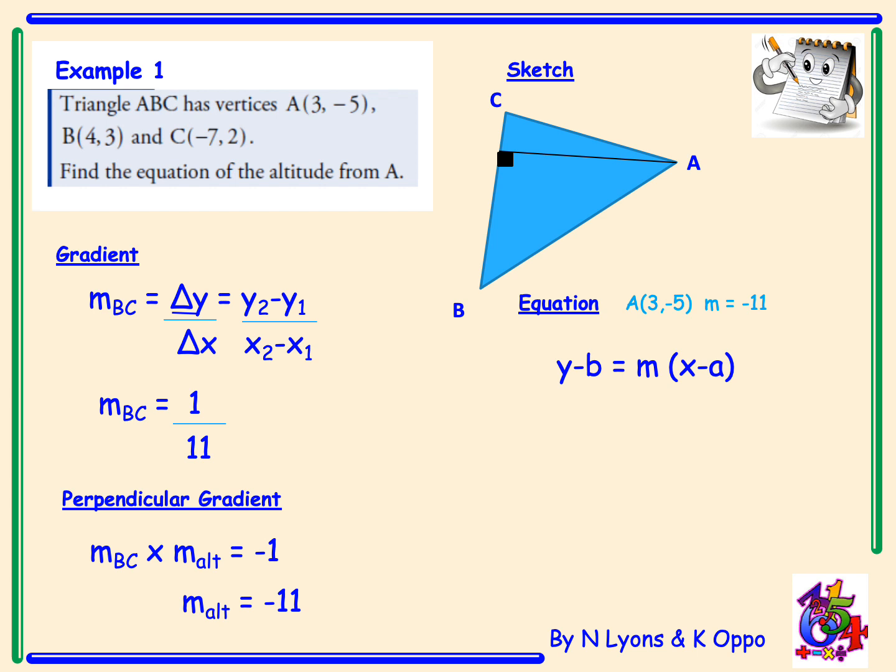Start with y minus b equals m bracket x minus a. Y minus minus 5 equals the gradient negative 11 bracket x minus 3. The next line we simplify minus minus 5 to plus 5 and expand our bracket on the right hand side. Finally, we rearrange the straight line equation to have 11x plus y equals 28.